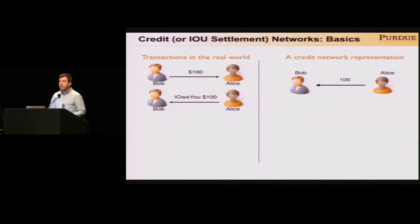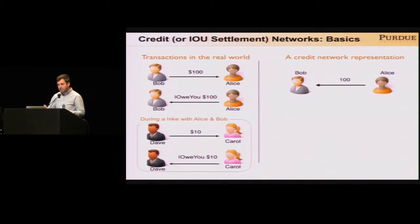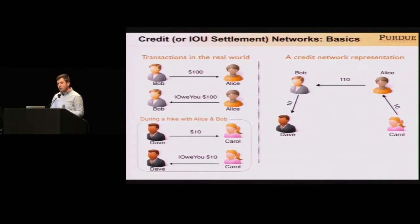As you can imagine, the credit network can be used to represent more elaborate situations. For example, imagine that Alice and Bob go for a hike and they decide to invite their friends Dave and Karu. During the hike, Dave pays for a drink for Karu, and at that moment Karu owes $10 to Dave. However, Karu doesn't know Dave too well and she's not really willing to settle the debt directly with Dave. Instead, what she can do is use the transitive trust that they have through Bob and Alice. In the credit network, this can be represented with Karu creating a credit link of 10 to Alice, Alice increasing her credit with Bob, and finally Bob creating a credit link of 10 with Dave. In such a manner, the debt is settled between Dave and Karu.